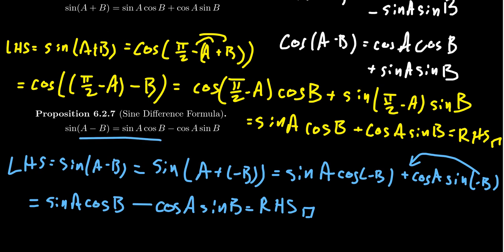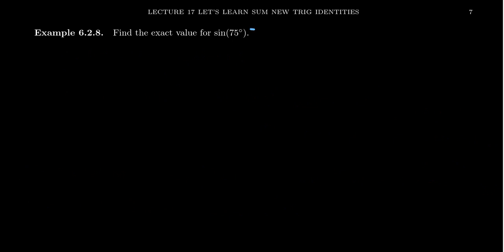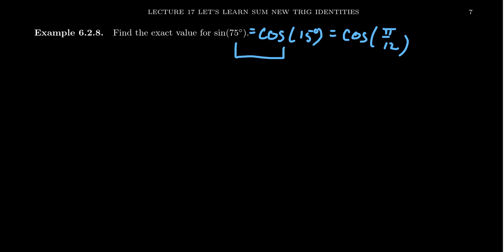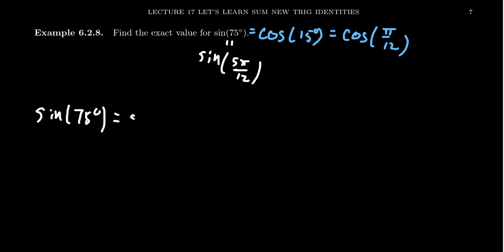Now let's put these into practice. In the previous video, I gave you the challenge to compute cosine of 15 degrees, which in radians is pi twelfths. By the co-function theorem, cosine of 15 degrees equals sine of 75 degrees, which in radians is sine of five pi twelfths. We can use the angle sum identity to compute sine of 75 degrees, since 75 degrees equals 45 degrees plus 30 degrees.